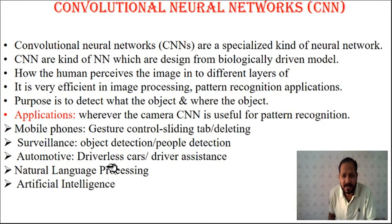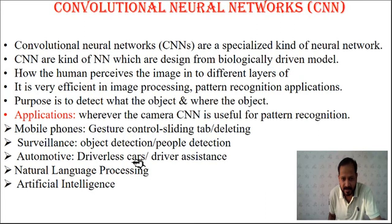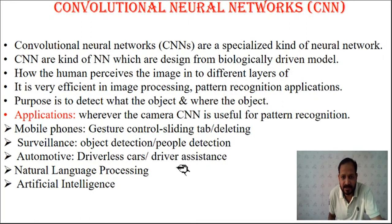In automotive applications, there may be driverless cars where the car detects objects such as pedestrians on the road, speed breakers, obstacles, or black-and-white lane lines. According to these detections, the driverless car takes action. Along with fully driverless cars, CNN can serve as a driver assistant — detecting road signs and turnings — which can be helpful assistance for the driver.